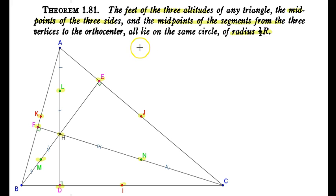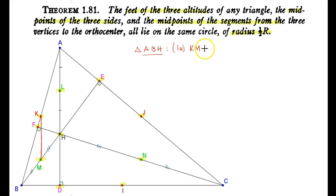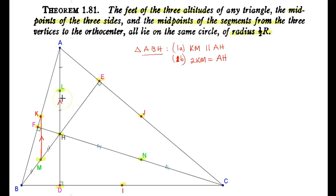Let's focus on triangle ABH. Line segment KM is the midline of that triangle because K is the midpoint of side AB and M is the midpoint of side BH. Let's call this result 1A. KM being the midline of triangle ABH is parallel to AH, and because it is the midline, KM is half the size of AH — so 2·KM = AH. Notice also that since AH is part of altitude AD, KM extended is perpendicular to BC.